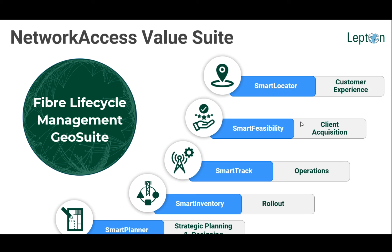Smart Inventory is the bedrock of the whole suite. All network records — whether in planned status or as-built status — are centrally managed within Smart Inventory. It's a database of record for all network records, both wireless and wireline. It also enables capturing service information, such as which customers are connected, and supports activities like circuit tracing. Smart Inventory is both a mobile and web solution — the web is where most planning activity occurs, while the mobile solution allows taking records to the field to support rollout activities.